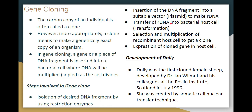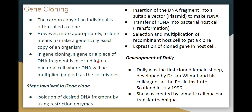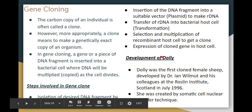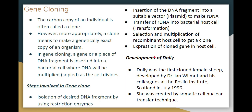The recombinant DNA (R-DNA) is then inserted into a bacterial host cell — this process is called transformation. The recombinant host cell is then cloned through selective multiplication. Through this multiplication, the cloned gene can be expressed. These are the steps involved in gene cloning.